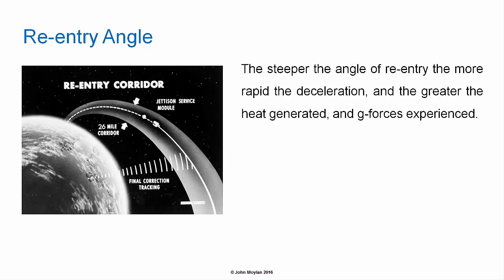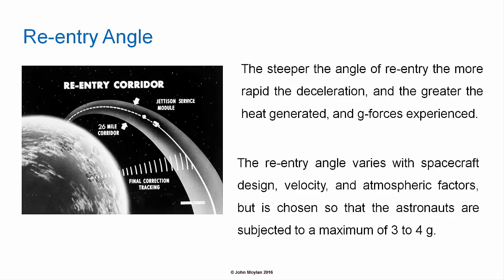There is an ideal angle for re-entry into the atmosphere. The steeper the angle of re-entry, the more rapid the deceleration and therefore the higher the g-forces experienced by the crew. Re-entry angle varies with spacecraft design, velocity, and atmospheric factors, but is chosen so that astronauts are subject to a maximum of about three to four g. The re-entry angle for the Space Shuttle was different from that for the returning Apollo astronauts, which was approximately seven degrees. The Space Shuttle has a wider range of re-entry angles which vary with atmospheric conditions, velocity, and several other factors.